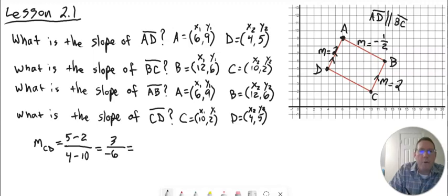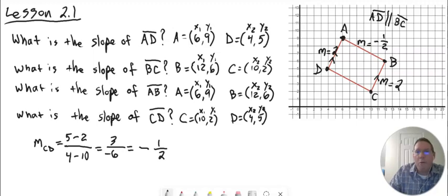Reduce: we have a positive divided by a negative, so the whole thing is negative. 3 and 6 are both divisible by 3 — 3 divided by 3 is 1, and 6 divided by 3 is 2. Once again we get a slope of negative 1 half. So this downward sloping line has a slope of negative 1 half. Note that this slope is the same as AB's slope, which means AB and CD are both parallel.